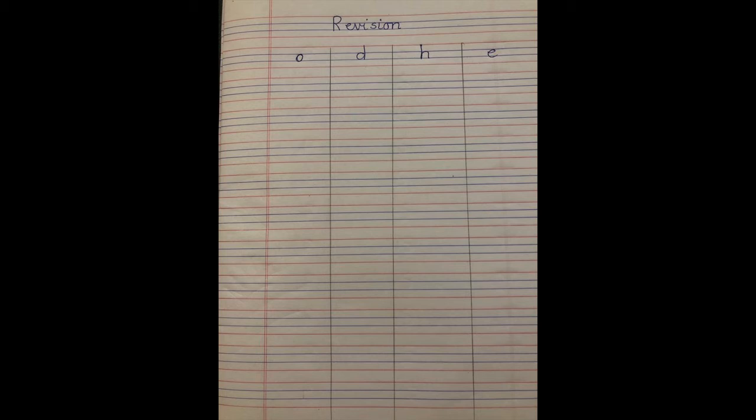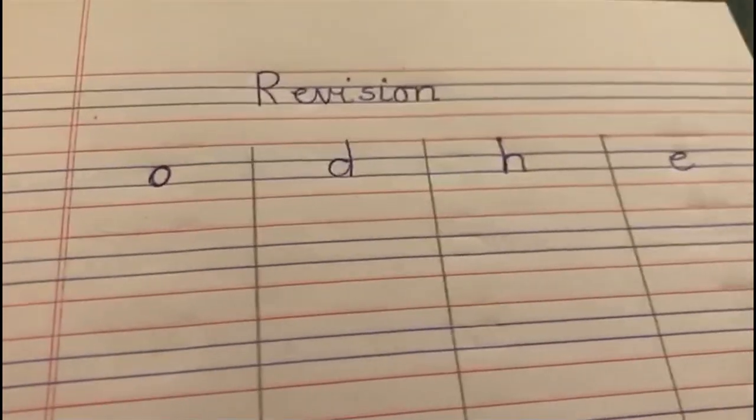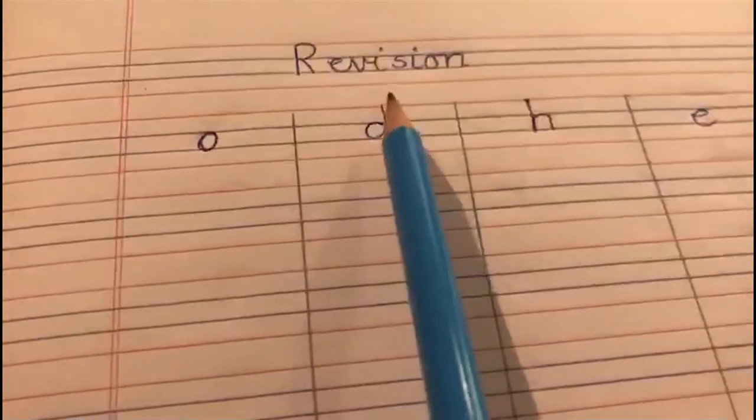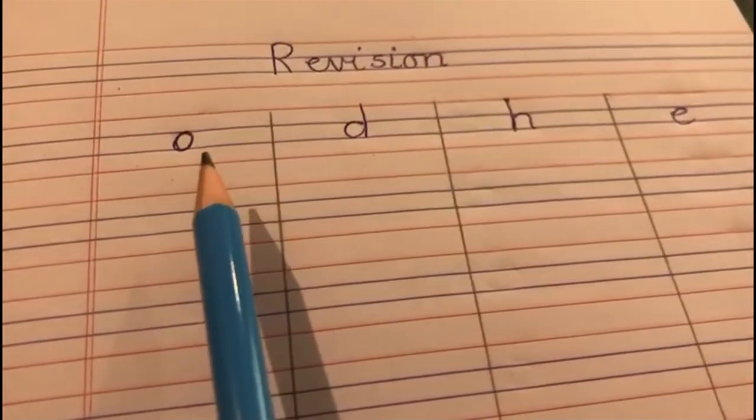Thank you, parents. Come on, children. Let's begin. So children, let's begin. This is the way your book is set. Yes, on top, revision is written. Then letter O, letter D, letter H and letter E is written.